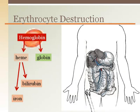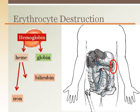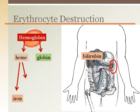Here is a schematic for the destruction of red blood cells. They are removed from circulation and destroyed in the spleen. The bilirubin byproduct is taken to the liver to be eliminated from the body via the GI tract.